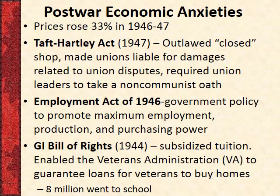The GI Bill basically meant that soldiers could go to trade schools or universities — not completely free but pretty close. This was a way of delaying for several years these soldiers going into the workforce. Instead of going into the workforce, they'd go to school, giving the economy a few years to figure out how to create jobs for these individuals.